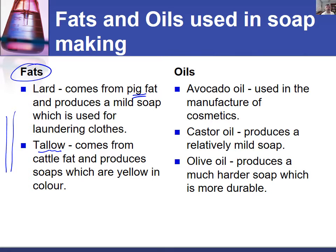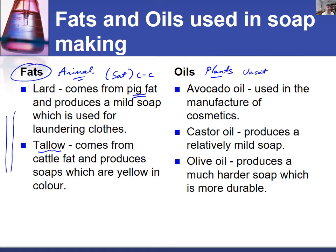If fats are more associated with animals, oils are more associated with plants. Most animal fats are what we call saturated fats, and we know that saturated and unsaturated relates to the bonding between the carbons in the chain. Plants are often unsaturated, or if there are many double bonds they might be polyunsaturated, indicating the presence of double bonds in the chain.